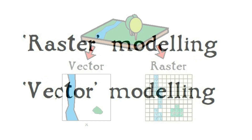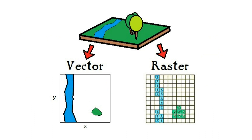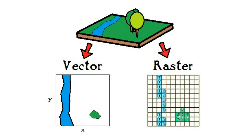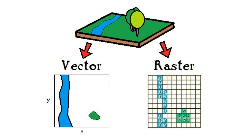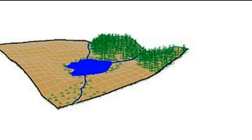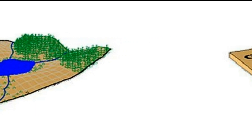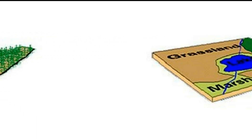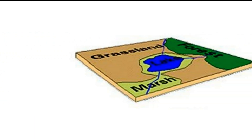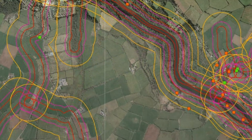Raster and vector modeling are essentially two ways of capturing and presenting real-world data. A vector model uses points, lines and areas to represent spatial data. This is great for representing non-continuous data, such as boundaries or binary relationships.